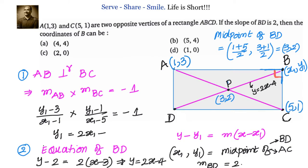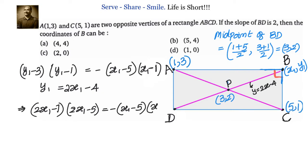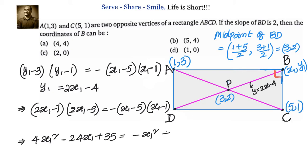We now have two equations in X1 and Y1. We substitute Y1 equals 2X1 minus 4 into the first equation. The first equation becomes 2X1 minus 7 times 2X1 minus 5 equals minus of X1 minus 5 times X1 minus 1. Expanding the brackets gives 4X1 squared minus 24X1 plus 35 equals minus X1 squared plus 6X1 minus 5.